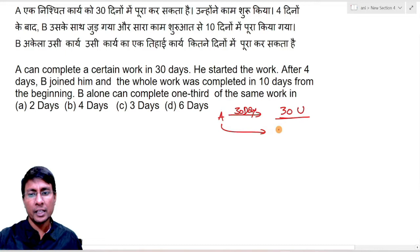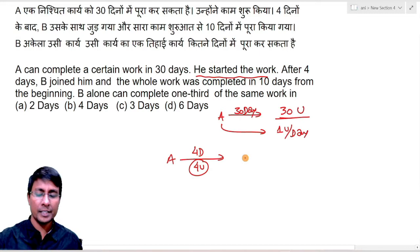The question says he has started the work. A started the work and worked for four days. So in four days, A completed four units. After that, B joined him. So now A and B will work together.